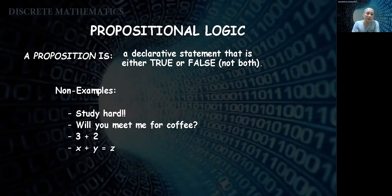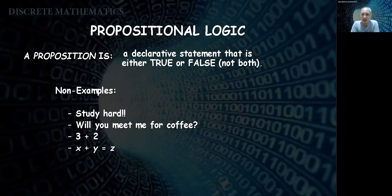Non-examples of propositions include: 'Study hard' — that's a command or instruction, not requiring a truth value. 'Will you meet me for a coffee?' is a question. 'Three plus two' with no following statement, and 'X plus Y equals Z' — we cannot know whether it is true or not because we don't know the values. So propositional logic is about a declarative statement that is either true or false.